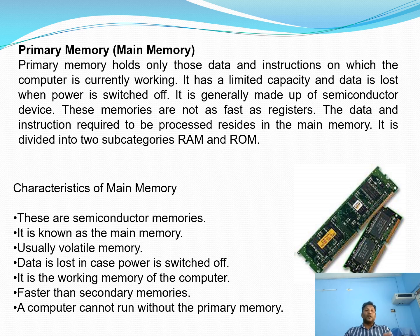Primary memory is divided into two subcategories: RAM (Random Access Memory) and ROM (Read Only Memory). The main characteristics of primary memory are: it is semiconductor memory, known as main memory, and usually volatile — meaning data is erased when the computer is switched off. It is the working memory of the computer, faster than secondary memory, and the computer cannot run without primary memory.